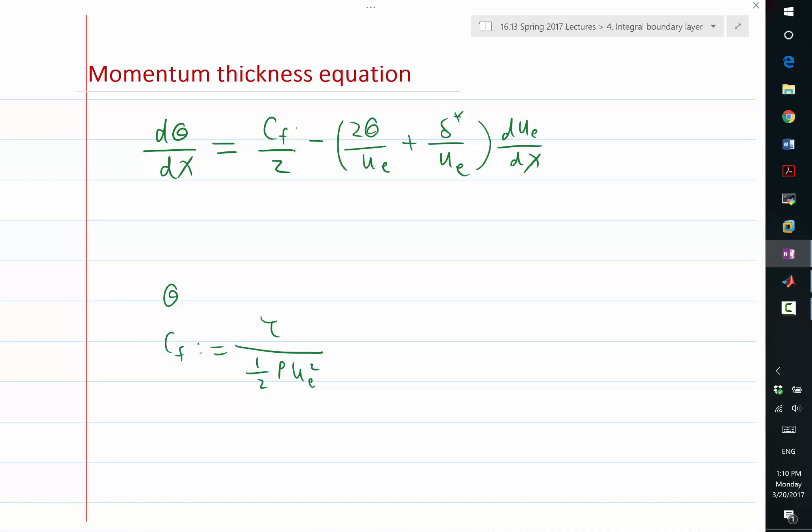So starting from this, theta is defined as the integration from 0 to infinity, u times ue minus u dy normalized by 1 over ue squared. So this is the definition of the momentum thickness. From this equation, we are trying to close the unclosed terms so that as soon as we are given an outside velocity profile ue as a function of x, we can integrate this equation and solve for theta as a function of x.